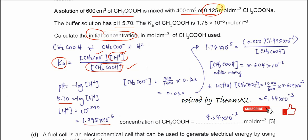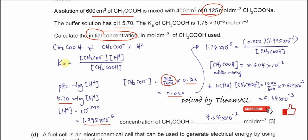The salt solution (400 cm³) is diluted into the total 1000 cm³, so the salt concentration in the buffer = (400/1000) × 0.125 = 0.05 mol dm⁻³. Substituting all values — Ka, [H⁺], and [salt] — into the Ka expression, rearrange to solve for [ethanoic acid] in the buffer. You get 5.604 × 10⁻³ mol dm⁻³.